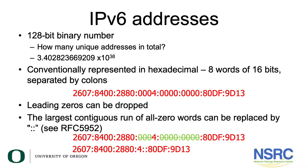Leading zeros can be dropped in hexadecimal numbers, and the largest contiguous run of all-zero words can also be replaced. For example, 0004 can be represented simply as 4, and eight zeros can be represented by a double colon. So the IPv6 address can be shortened to 2607:8400:2880:4::80df:9013.